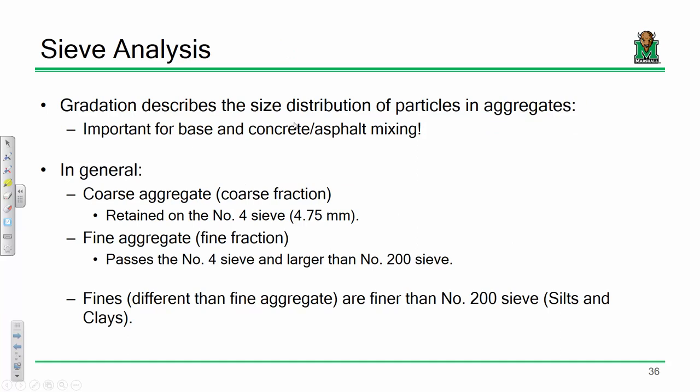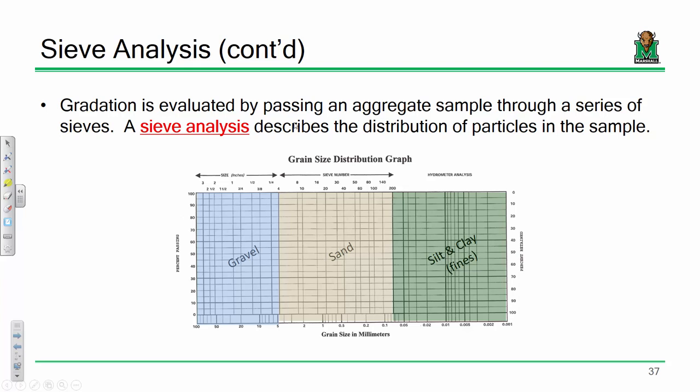Coarse aggregate is aggregate retained by the number four sieve. Fine aggregate is what passes the number four sieve. What we're really interested in is gradation — particle size distribution through a series of sieves. We'll plot on a semi-log gradation plot. Anything to the right of the number four on the plot would be indicative of a gravel-type aggregate; anything in the central region would be a sand.